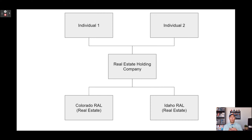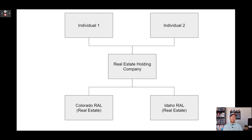These entities own the real estate and they accept the payments from the operating facilities, so that it can then pay the debt service on the SBA loan. In our case, these real estate entities are who did the SBA loan — that's who owns the real estate, that's who has the debt service with the SBA, and that's who's on title for the loans. The operational entity has a lease agreement that is set up and it pays the real estate entity so that the real estate entity can then pay the debt service.